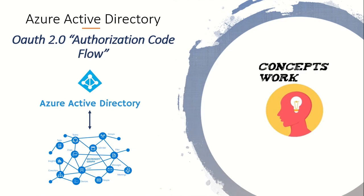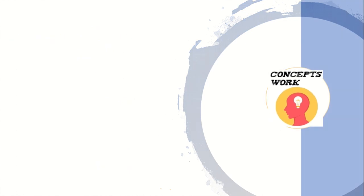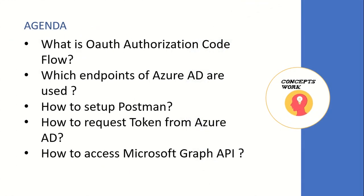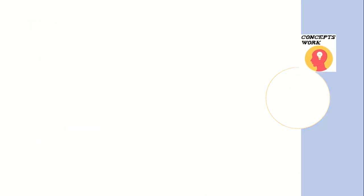Hi guys, hope you're all doing well. Welcome back to our series on Azure Active Directory. In this video we are going to check how we can use OAuth 2.0 authorization code flow with the help of the Postman app to access Microsoft Graph API, which is protected by Azure AD. The entire agenda of this video will cover how to request an access token and use it with Graph API.